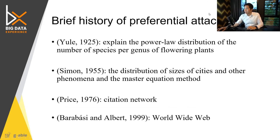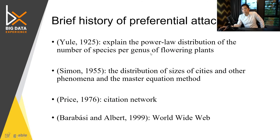Let's take a look at some history of preferential attachment. From some lectures online: in 1925, power law distribution was used to explain the number of species per genus of flowering plants. So in terms of frequency, the power law relates to the connection to species per genus.